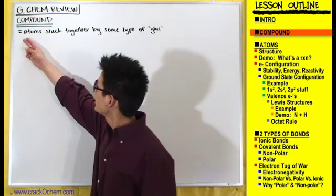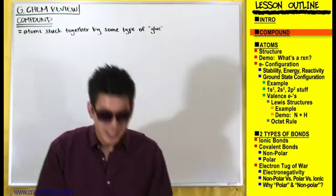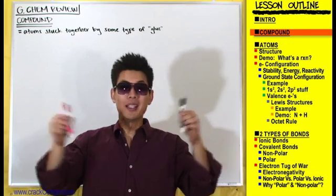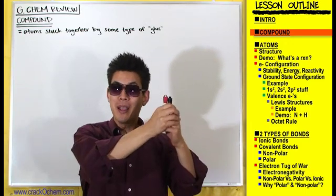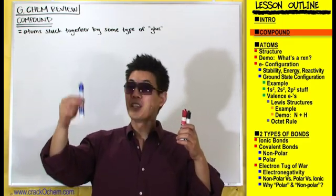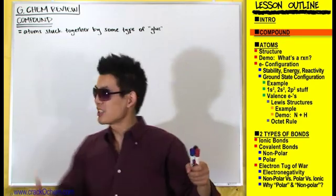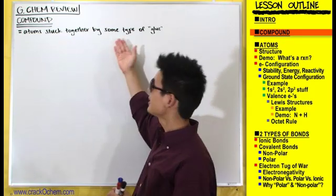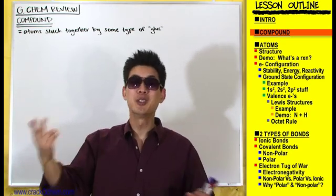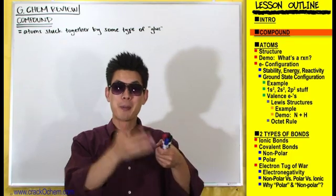A compound is just atoms that are stuck together by some type of glue. Pretend each of these markers is an atom — by themselves, they're just atoms. But if you stick those atoms together with some type of glue, then that's a compound. You can keep adding more atoms and stick them together, and the whole thing is still a compound. It doesn't matter what type of glue you use — crazy glue, Elmer's white glue, glue stick — as long as you stick atoms together, that's a compound.